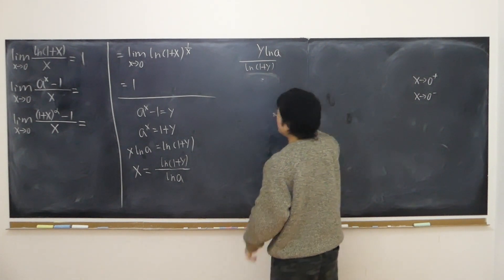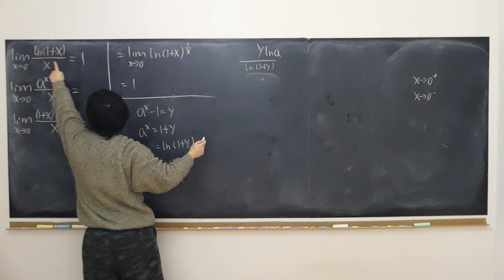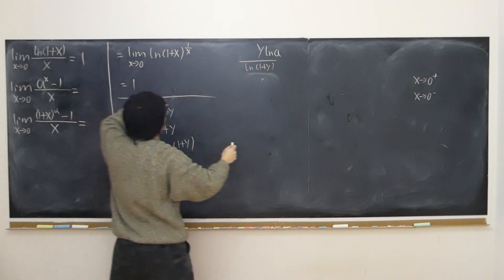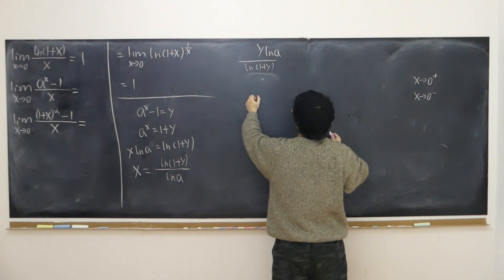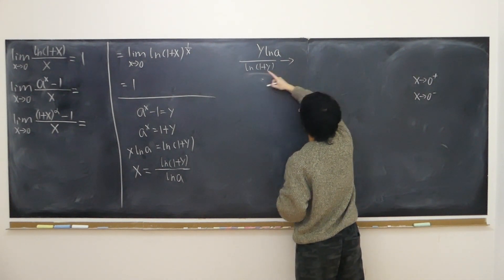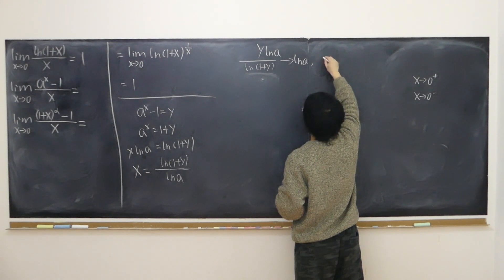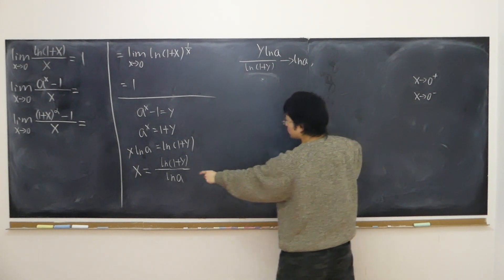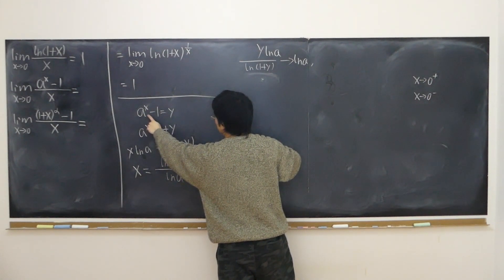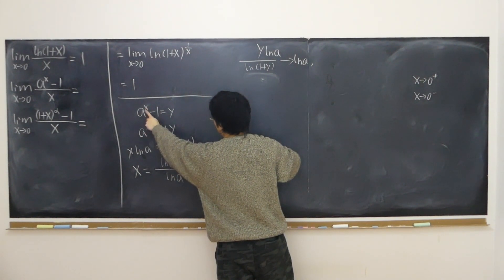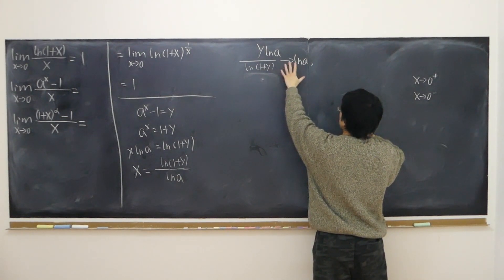This looks familiar — y over logarithm of (1 + y). I just need to replace x with y. We know that logarithm of (1 + y) over y approaches 1, and its reciprocal y over logarithm of (1 + y) also approaches 1. So this should easily approach 1 times log a, which is log a. When x approaches 0, a to the power of 0 is 1, so 1 minus 1 is 0, meaning y also approaches 0. So this really approaches logarithm of a.